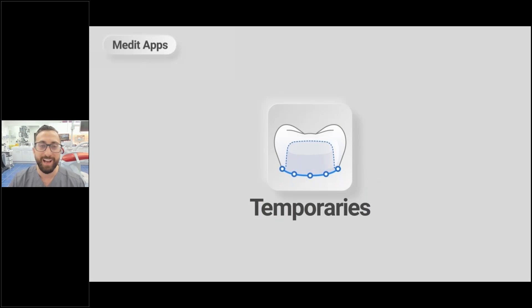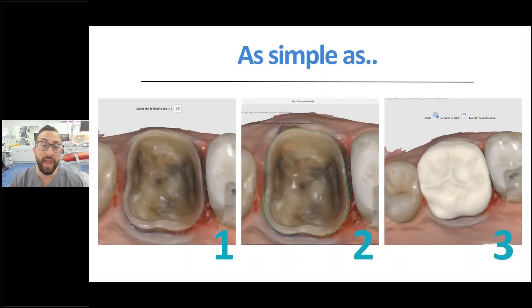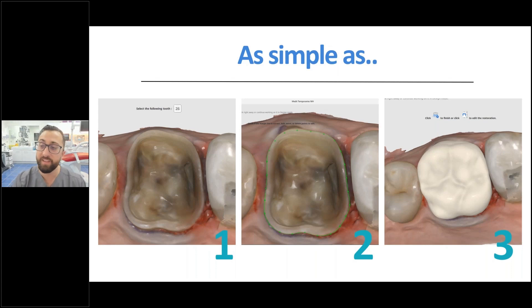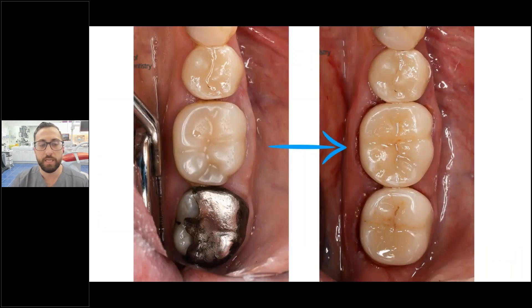Medit Temporaries was a popular app, and I felt it was the company testing the waters before developing Clinic CAD. It started with requiring a pre-op scan, then they developed their own library, then AI. Now you can make a temporary crown in a couple of clicks — you import your scan, delineate your margin line just like Exocad or Cerec, and the AI with a tooth library generates the temporary crown for you.